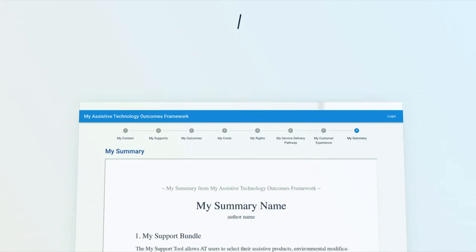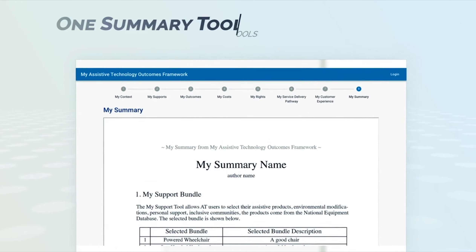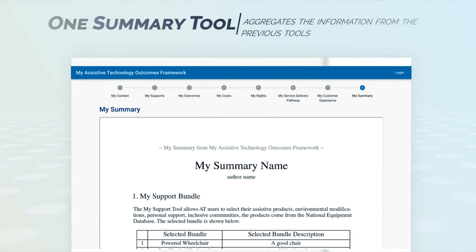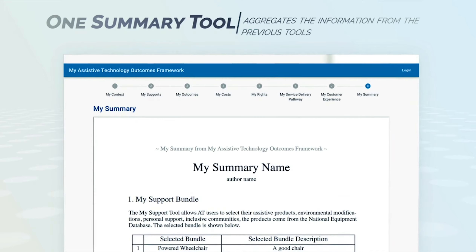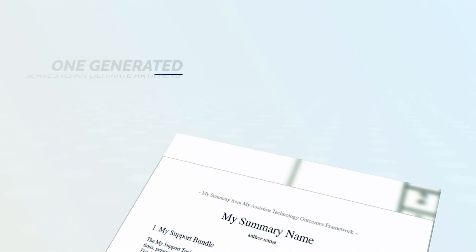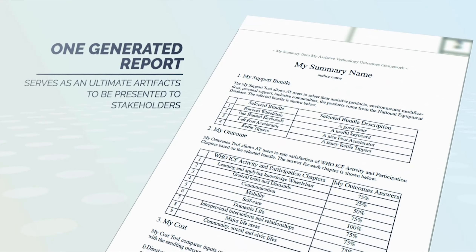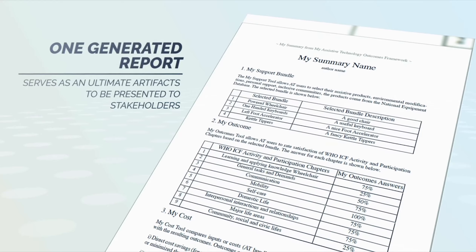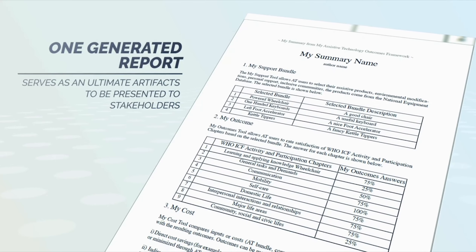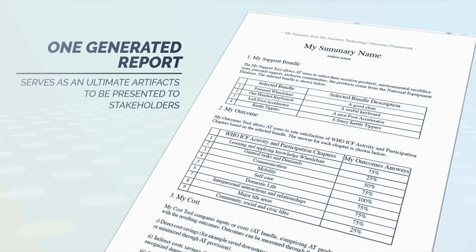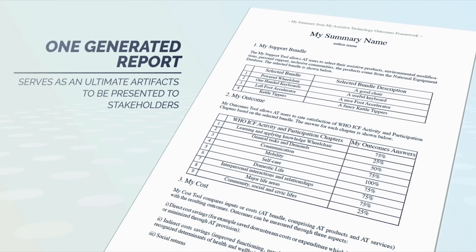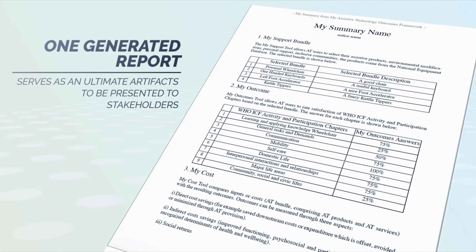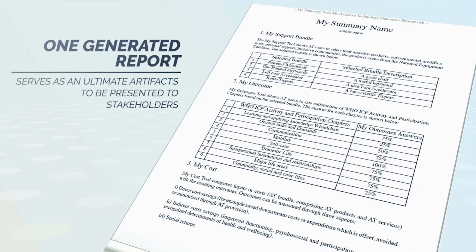My Summary Tool is a preview that gathers and extracts the information filled in previously. Upon viewing the summary, users are able to finalize it or go back to re-edit. On completing the tool, a report containing all completed answers is generated as the outcome from the framework. Users may use this report as a strong articulation of their needs, and it also serves as a reference for stakeholders to consult.